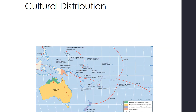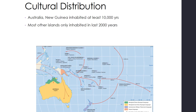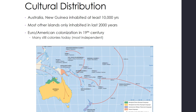Looking at the cultural distribution of the region: Australia and New Guinea have been inhabited for at least about 10,000 years. Most other islands have only been inhabited for the last 2,000 years. We saw European and American colonization in the 19th century, and we have many colonies that still exist today — for example, Guam is a U.S. territory — but most of them are independent.